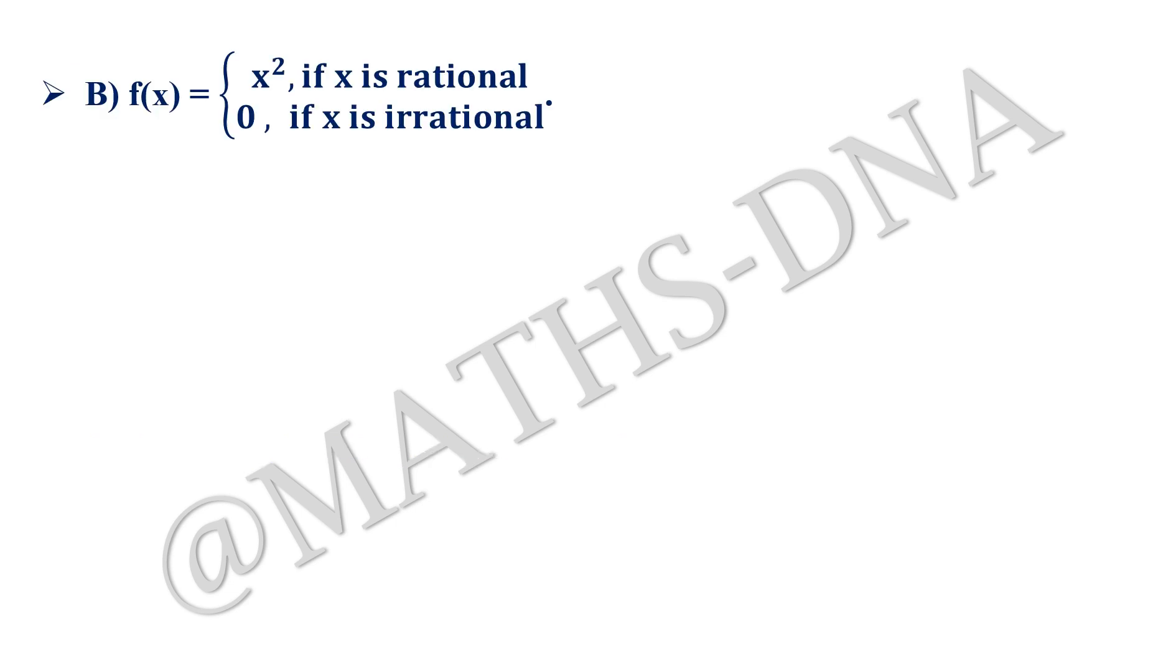Now moving on to option b. Option b says that function is x square if x is any rational number and 0 if x is any irrational number.